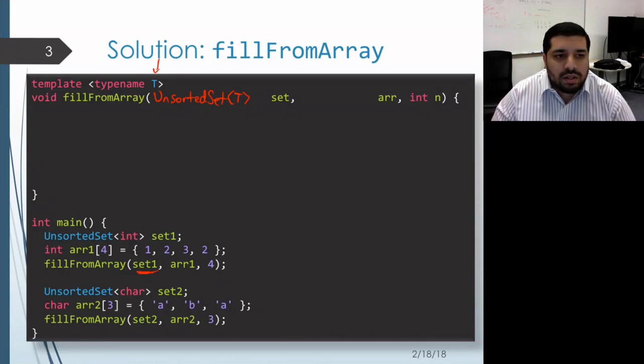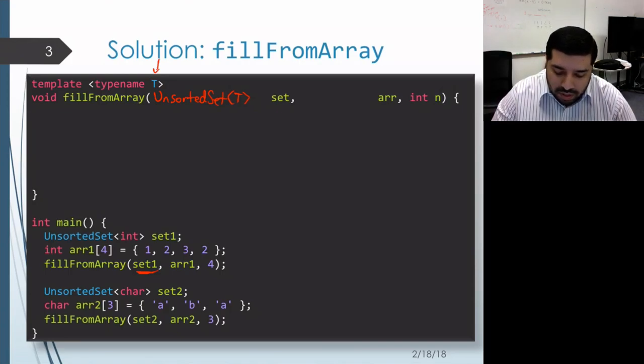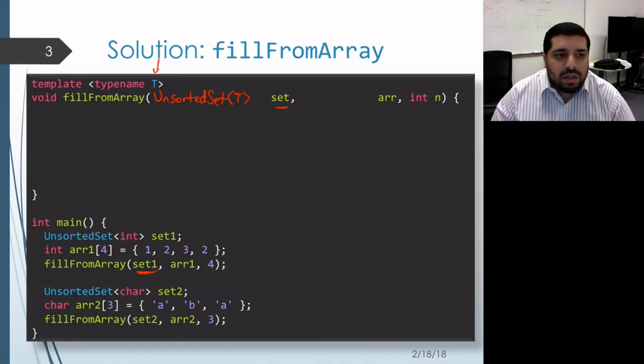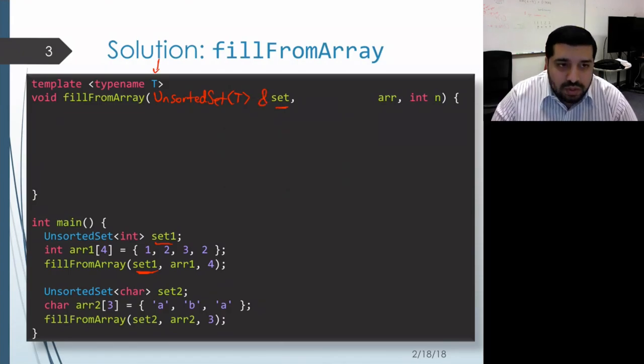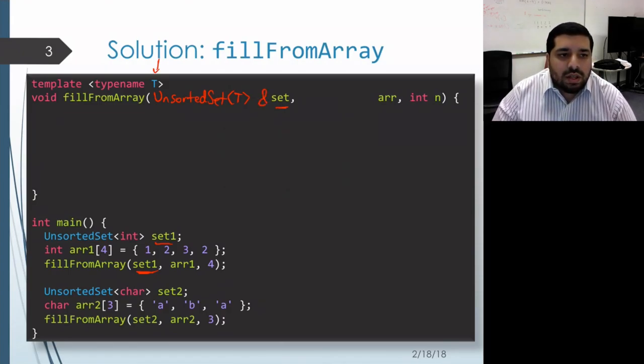Now the way that it's written right now is that we're passing by value, which means that we actually get a copy of the set object when fillFromArray is called. That set parameter is going to be an object that lives in the activation record for this function, and that means that if we insert elements into this set, we're inserting it into a completely different object than the set object that lives in main. So rather than making a copy by passing by value, what we should do is pass by reference instead. This will set up that set variable to be an alias for the set object that's actually in main.